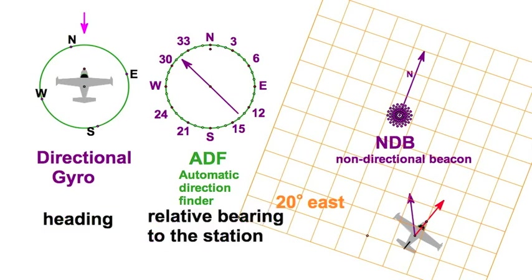The directional gyro clearly shows heading. And the ADF shows something that we call relative bearing, in this case, to the station.